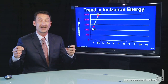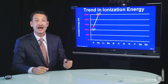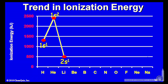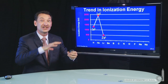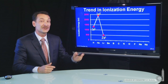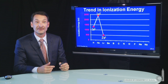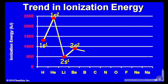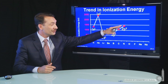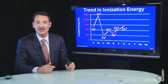Increasing that positive charge on the nucleus was much more dramatic than adding another electron — it's much harder to pull off an electron from helium than hydrogen. For lithium, I've gone into the 2s orbital. I have two 1s electrons shielding that outer 2s electron, and lithium is remarkably easy to ionize, even easier than hydrogen itself. As you go across: beryllium 2s2, boron 2p1, carbon 2p2, and nitrogen 2p3, you have a general trend of increasing ionization energy.